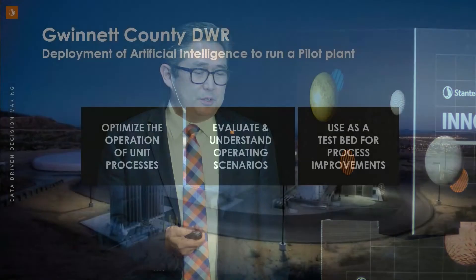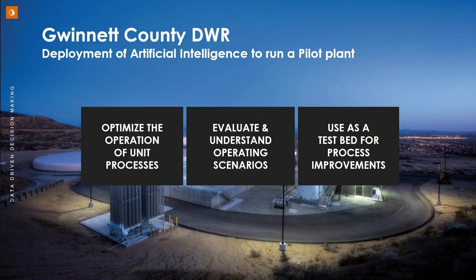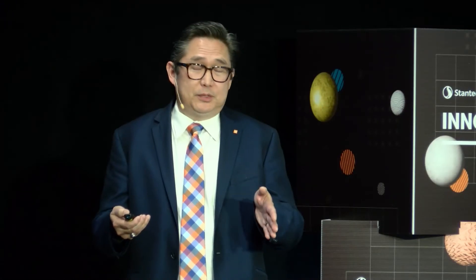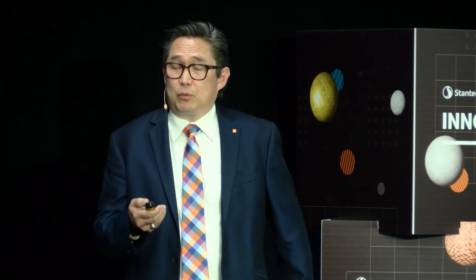The last objective — and they're already doing this — is to use the pilot plant as a test bed for process improvements. There are actually two pilot plants right next to each other. One is just for drinking water; the other has feeds in from their wastewater plant. So future adaptations of this would be able to run AI and machine learning for water reuse.